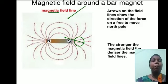Arrows on the field lines show the direction of the force on a free-to-move north pole. The stronger the magnetic field, the denser the magnetic field lines.